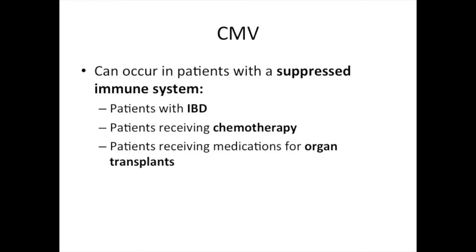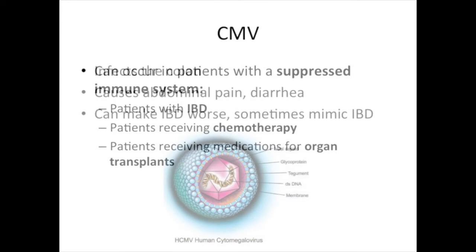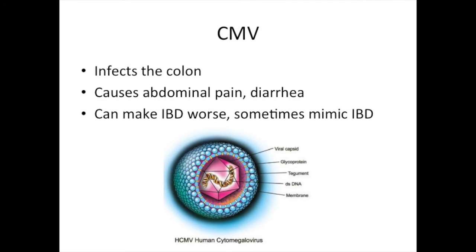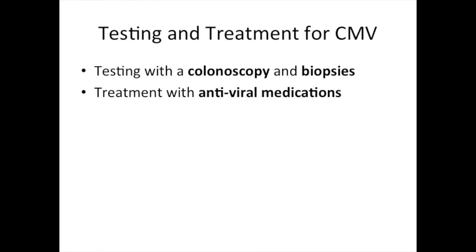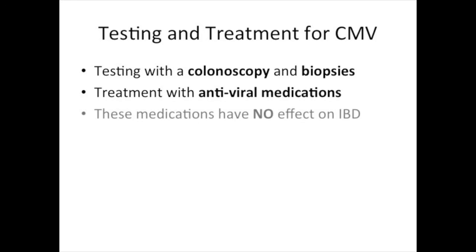Finally, let's talk about CMV. CMV infection can occur in patients who have a suppressed immune system, like patients with IBD, patients who are receiving chemotherapy, and patients who have powerful medications for organ transplants. CMV can infect the colon and cause abdominal pain and diarrhea that can even be bloody. CMV infection can make IBD colitis worse and can sometimes mimic IBD colitis. We can test for CMV by doing a colonoscopy and obtaining biopsies. CMV is treated with powerful antiviral drugs. These medications work very well for CMV.